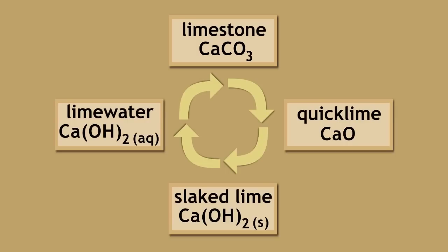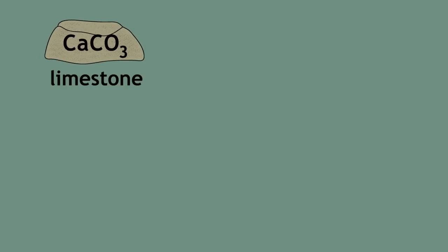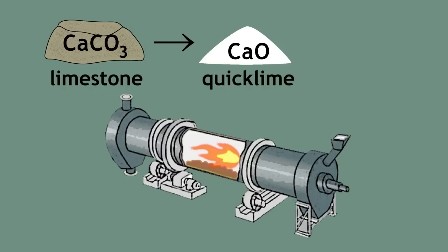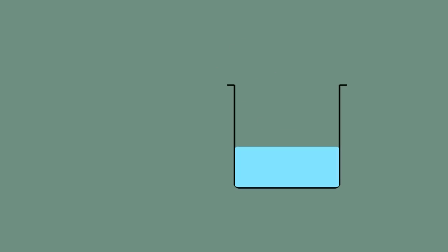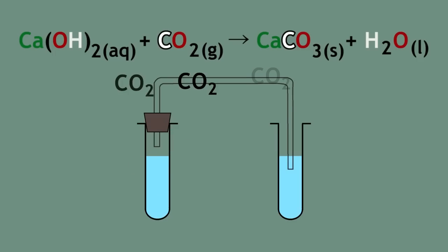To recap the limestone cycle, limestone can be thermally decomposed to form quicklime and carbon dioxide. Quicklime reacts with water to form slaked lime. Slaked lime dissolves in water to form lime water. Lime water reacts with carbon dioxide to form calcium carbonate, the main component of limestone.